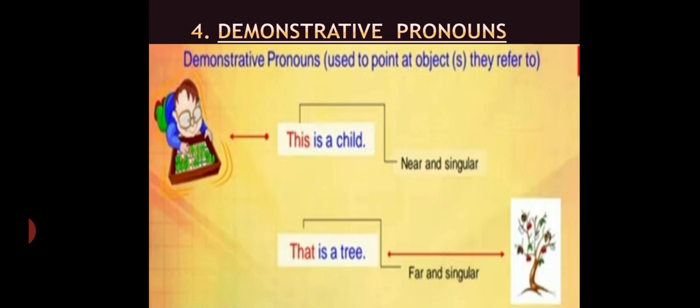Next is Demonstrative pronouns. Demonstrative pronouns are used to point at object or objects they refer to, means they point out specific someone or something. For example, this is a child, that is a tree. Here, this and that are demonstrative pronouns, whether it is near or far or it may be singular or plural.